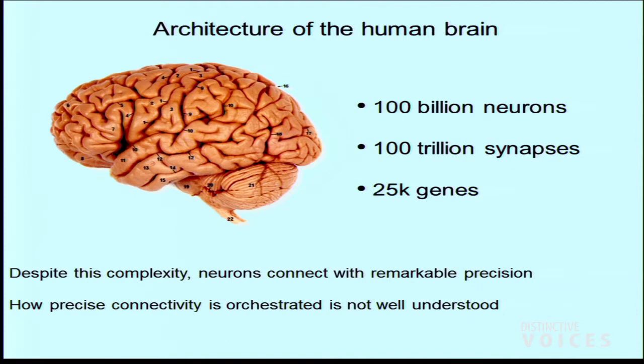It turns out that if you just catalog the genes and look at their function, that's pretty good — it gives you a start. But what you really want is a movie of how the whole brain comes together, ideally with enough resolution to see individual neurons and even beneath an individual neuron. Despite the microscope technology I'm going to tell you about today, that's currently not possible.